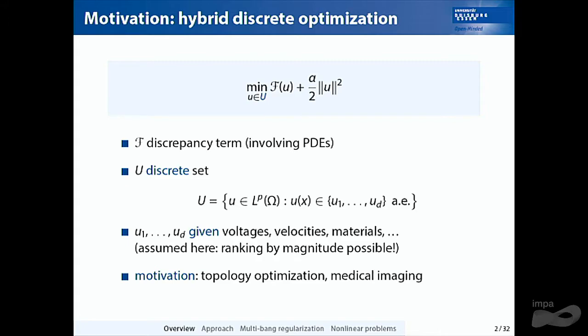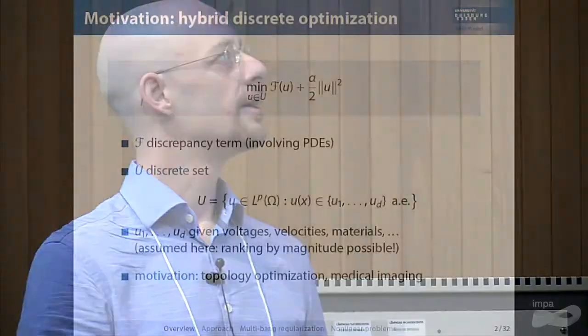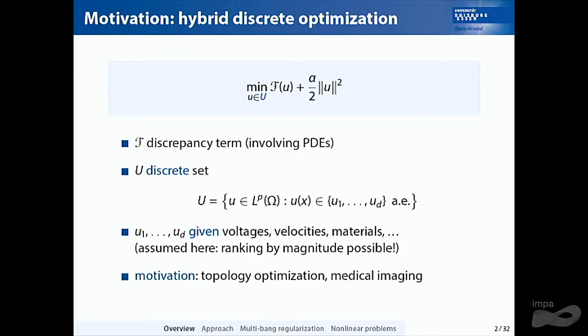In addition to this classical Tikhonov-type regularization, you know that your parameter u — the unknown thing you try to recover — should take values only from a finite set u1 to uD. These could be material parameters in topology optimization or medical imaging: background, healthy tissue, cancerous tissue, or concrete versus defective steel. The problem is that this is a non-convex set, so the standard theory of existence, optimality conditions, and so on is no longer applicable, because the functional is no longer lower semi-continuous.